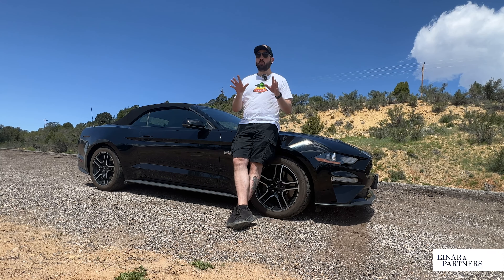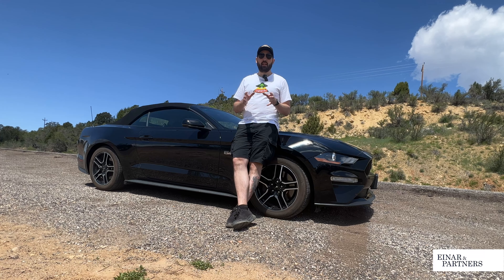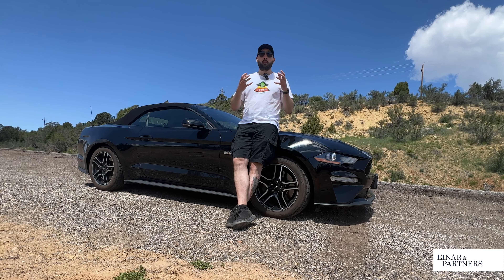You might now say: hold on a minute — you said technical services are on the service layer, but they are on the operational side. And that is exactly the case. Because in the end, technical services are services provided by operations towards the business, meaning they underpin business services. So now we know how application services connect services and operations in our CSDM framework.